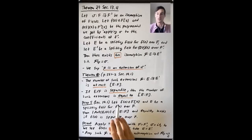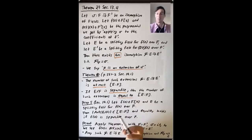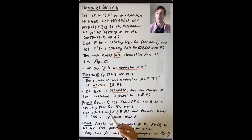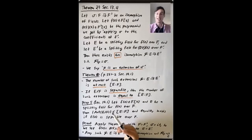In the last video, we proved that if L over K is a finite extension, then the group of automorphisms of L fixing K is a finite group. But we want to know more — we want to know how big this group actually is. The starting point for understanding this question is a theorem we proved a few lectures ago.